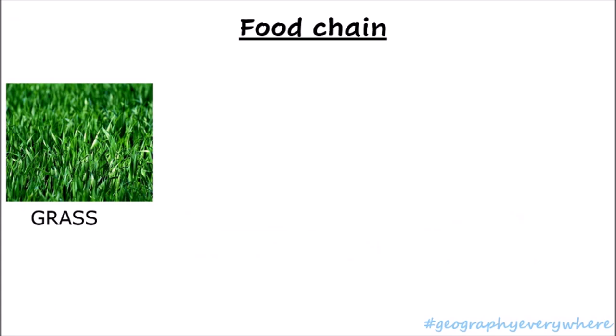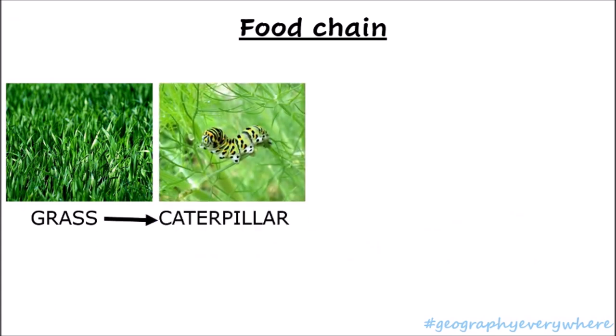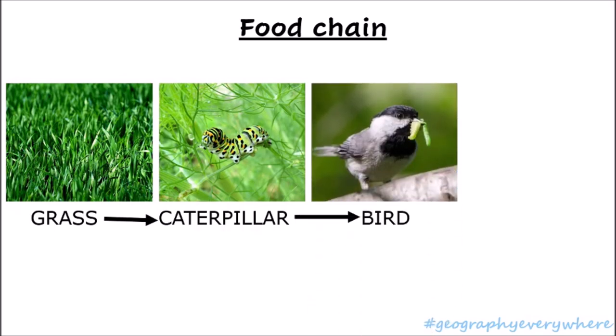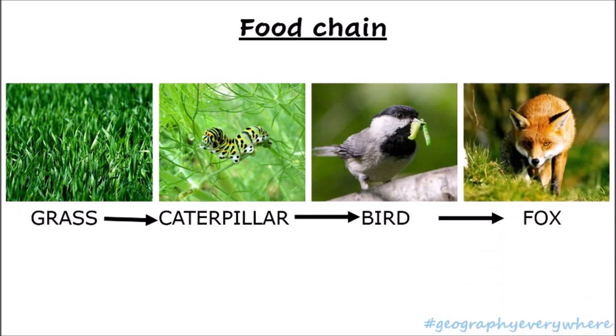Let's start with food chains. I have the grass, which then is eaten by a caterpillar, which can be eaten by a bird, and that bird can eventually be eaten by a fox. We've already said that the grass is a producer — the grass is a producer because it's producing its own energy.